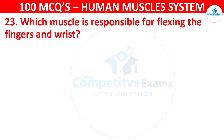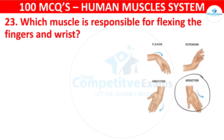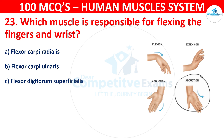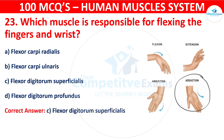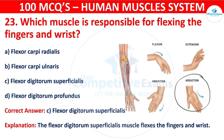Question number twenty-three: Which muscle is responsible for flexing the fingers and wrist? Your options are: Flexor carpi radialis, Flexor carpi ulnaris, Flexor digitorum superficialis, or Flexor digitorum profundus. The correct answer is C, that is flexor digitorum superficialis. The flexor digitorum superficialis muscle flexes the fingers and wrist.